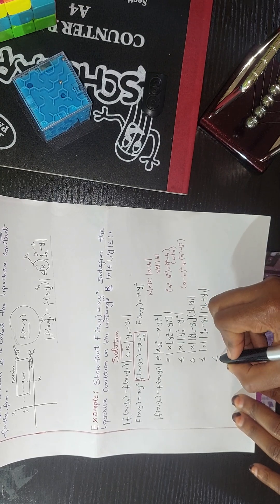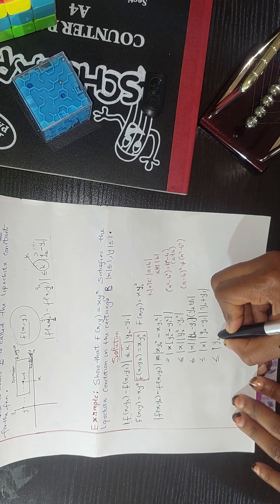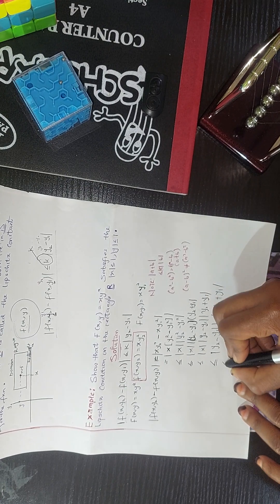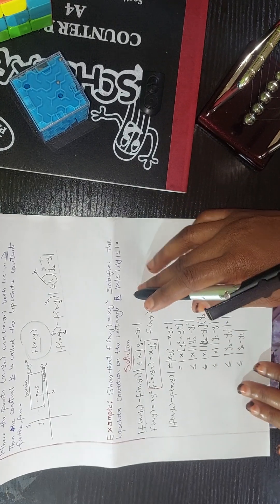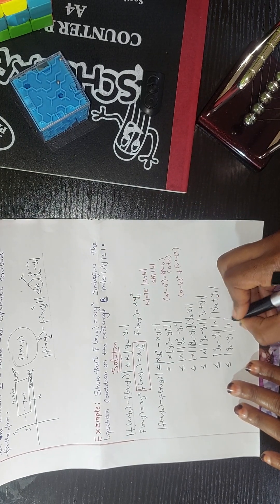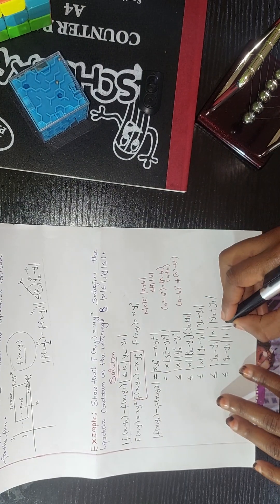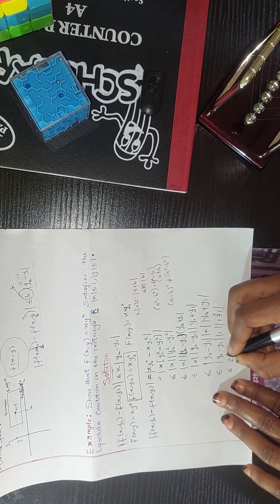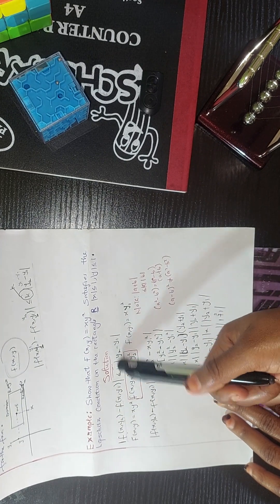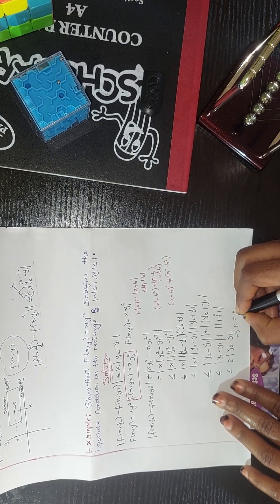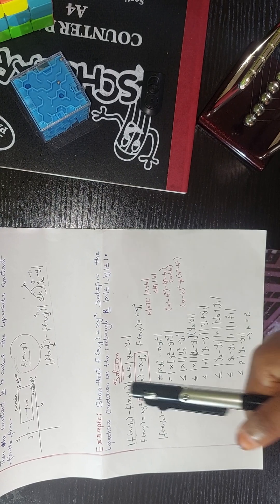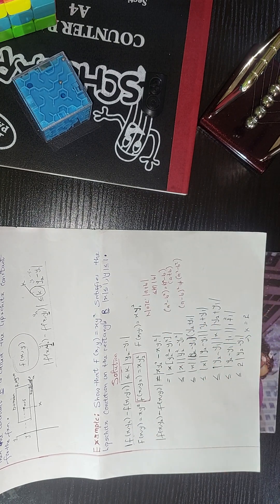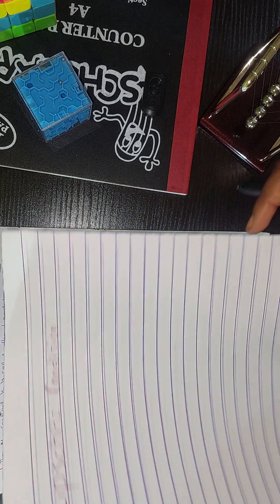So we have |x|·|y2 + y1|·|y2 - y1|. Now in the problem statement, x ≤ 1 and y ≤ 1 at any point of y. So |y2 + y1| ≤ 1 + 1 = 2, and |x| ≤ 1. This gives us ≤ 2·|y2 - y1|. Comparing with the Lipschitz condition, K = 2, so the function satisfies the Lipschitz condition on rectangle R.